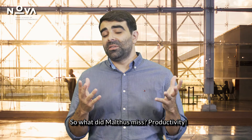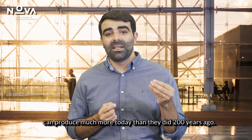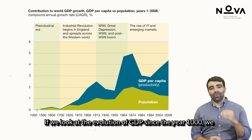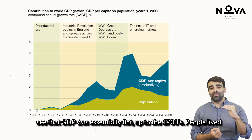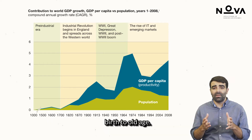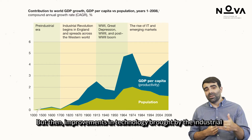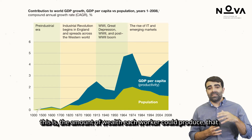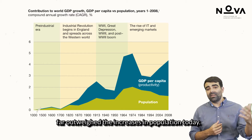So what did Malthus miss? Productivity. The ability that workers with the same amount of resources can produce much more today than they did 200 years ago. If we look at the evolution of GDP since the year 1000, we see that GDP was essentially flat up to the 1700s. People lived and died in societies that looked pretty much the same from birth to old age. But then, improvements in technology brought by the industrial revolutions started a period of increase in productivity that far outweighed the increases in population.